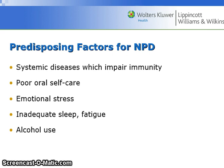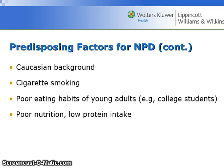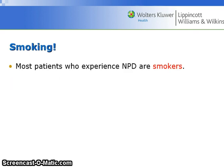Predisposing factors for NPD are systemic diseases which impair immunity, poor oral self-care, emotional stress, inadequate sleep or fatigue, and alcohol consumption. Caucasians are more likely to get NPD. Cigarette smoking is also a factor. The poor eating habits of young adults, especially college students, can be a contributing factor due to poor nutrition and low protein intake.